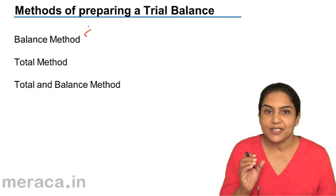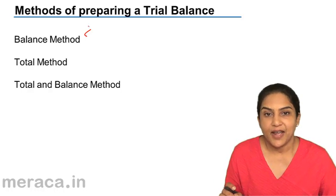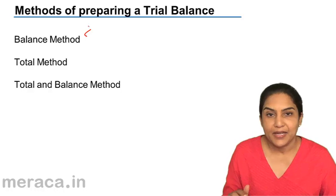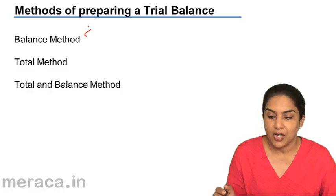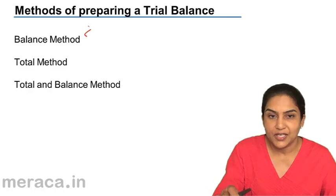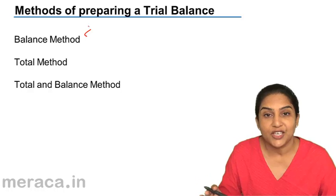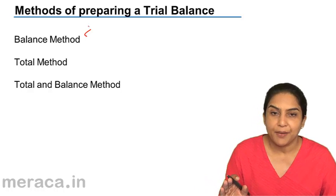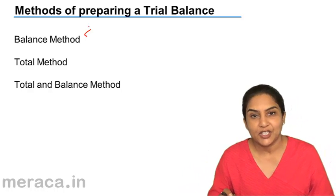This balance is picked and put in the trial balance — that is the balance method. In the trial balance, we have a column for the serial number, the particulars or names of the account, a debit balance column, and a credit balance column.